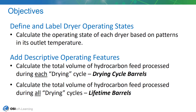We have two primary objectives. First, we need to define and label dryer operating states. Based on the patterns of the dryer outlet temperatures, we'll need to configure a rule in ACID analytics that allows us to identify the operating state of each dryer at any point in time.